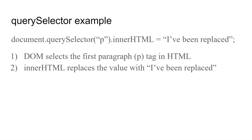Here's a querySelector example. We say `document.querySelector('p').innerHTML = 'I've been replaced'`. We're going to select the first paragraph tag in this HTML document and replace it with the value 'I've been replaced'. Why don't we practice this now? Open up Replit, open up your editor, and let's get started.